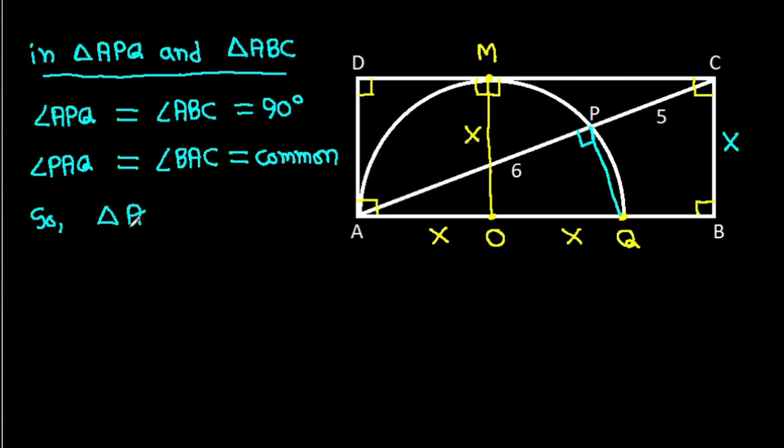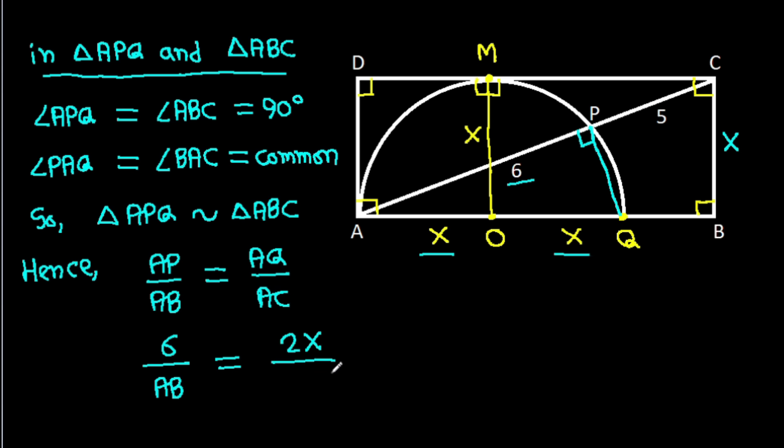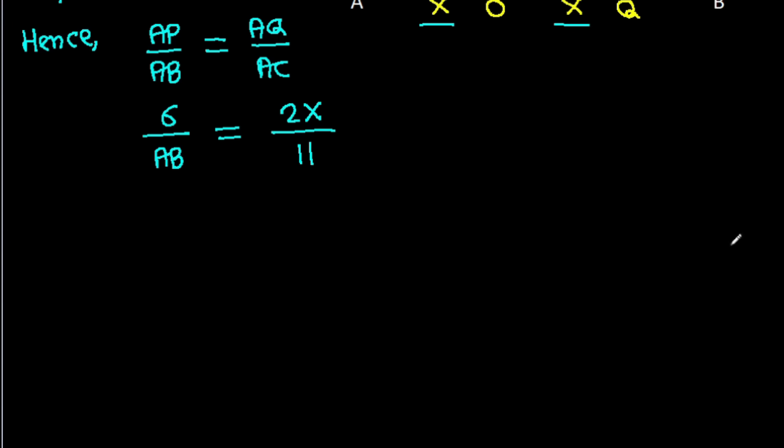So triangle APQ will be similar to triangle ABC. Hence, AP over AB will be equal to AQ over AC. AP is 6 over AB. AQ is X plus X, that will be 2X, over AC, which is 6 plus 5, that will be 11. If we cross multiply, then 6 times 11 will be 2X times AB.